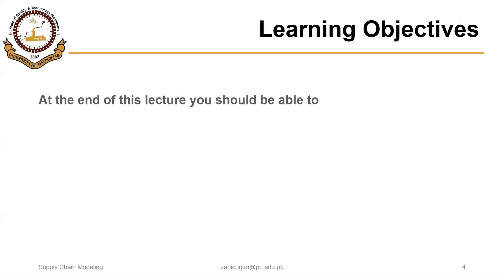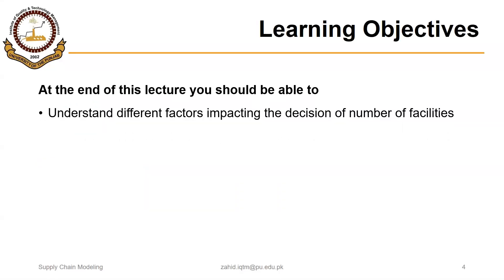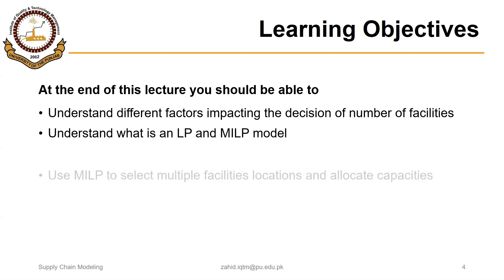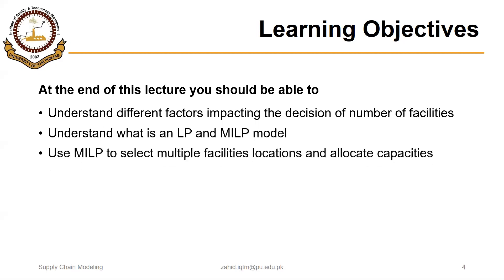The learning objectives of this lecture are to understand different factors impacting the decision of number of facilities, understand what is an LP and MILP model — linear programming and mixed integer linear programming model — and then use MILP to select multiple facility locations and allocate capacities. So this model will actually help us decide two things: select facilities among the available options, and allocate capacities.